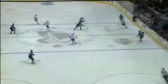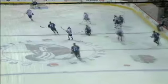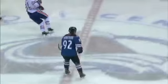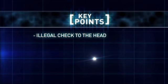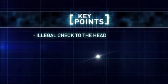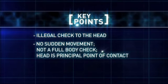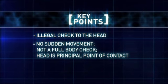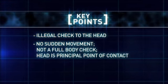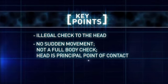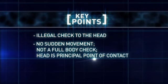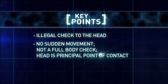We have also taken into consideration that although Sutton has played a physical game over his 14 years, he has been fined and suspended for various illegal checks. To summarize, this is an illegal check to the head. Landeskog makes no sudden moves immediately prior to or simultaneous with the check, putting the onus on Sutton to deliver a full-body check and not make the head the principal point of contact.